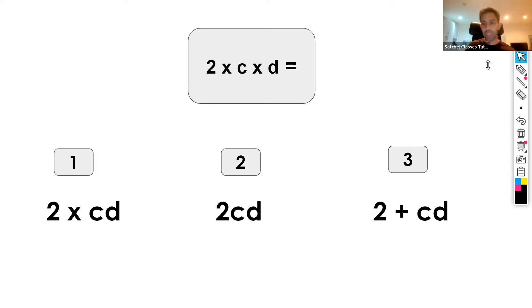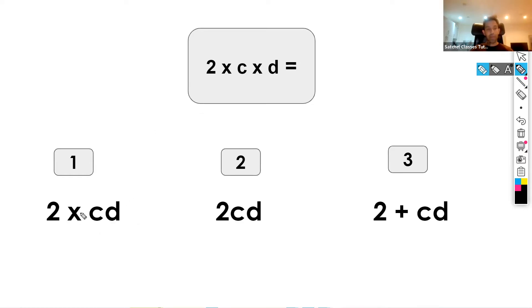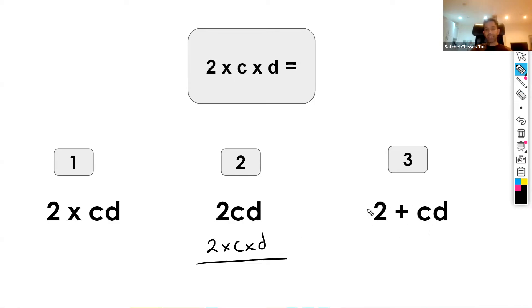Next: 2 times c times d. You might say it's 2 times cd, which is partially correct, but it's not fully simplified because we can still eliminate the multiplication sign. So rather than saying 2 times cd, we simply say 2cd, because 2cd means 2 times c times d. The option 2 plus cd would be totally wrong because we are not adding 2 to cd — we are multiplying cd by two. So 2cd is the correct option.